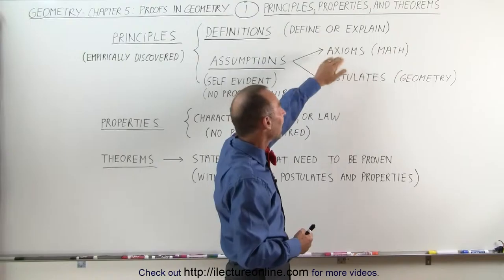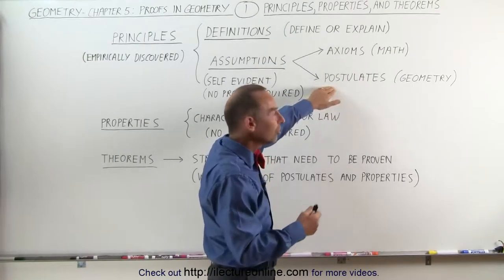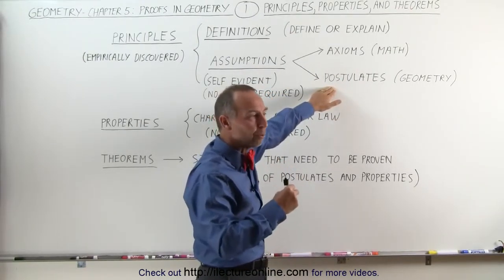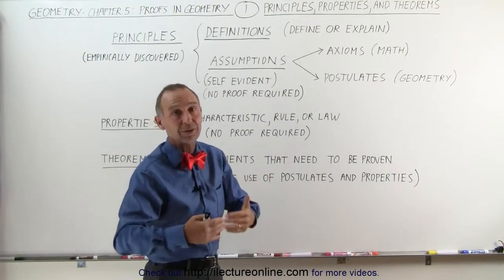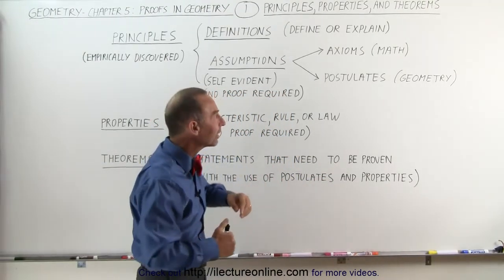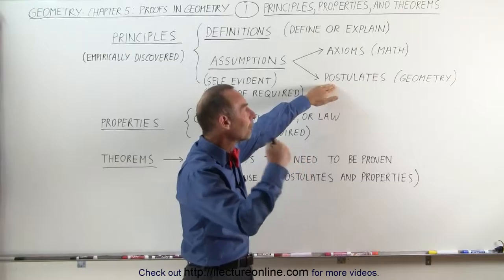The two categories are called axioms and postulates. Now axioms is something that you use in math like in algebra. For example, that a plus b equals b plus a. That would be considered an axiom.